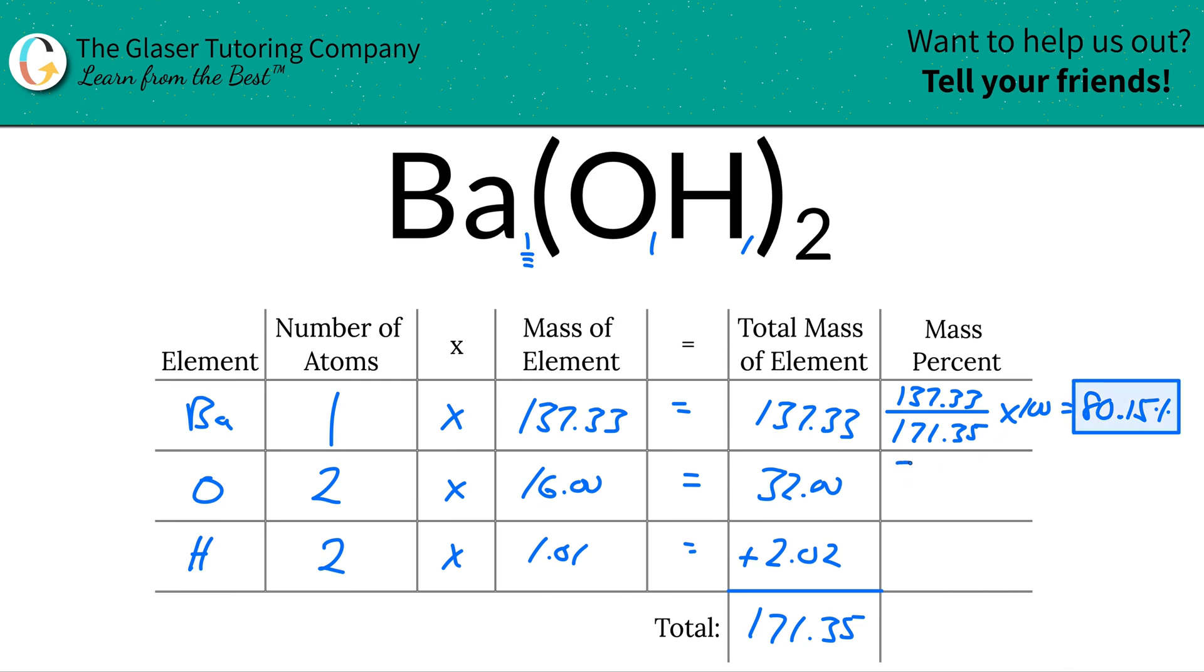Same thing for oxygen. We're going to take the total amount of oxygen, which is the 32. So you're always taking this column, not this number. 32, you're going to divide it then by the 171.35. Again, same thing as part over whole. Multiply that by 100, and you're going to get a percentage of about 18.68 percent. That's the percent for oxygen.